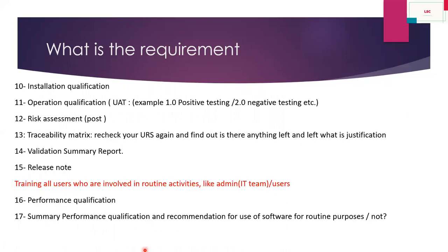The functional specification covers software functions; the configuration specification covers your user requirement configuration. After that, provide training to all users who are going to be involved in the validation activity. Then perform Installation Qualification and Operation Qualification. During Operation Qualification you can include UAT (User Acceptance Testing) — positive testing, negative testing, etc. After that, perform a post-risk assessment: compare the URS with the current RPN numbers to see if the risk priority number has been reduced from the previous assessment. Then review the Traceability Matrix to check if anything in the URS was missed.